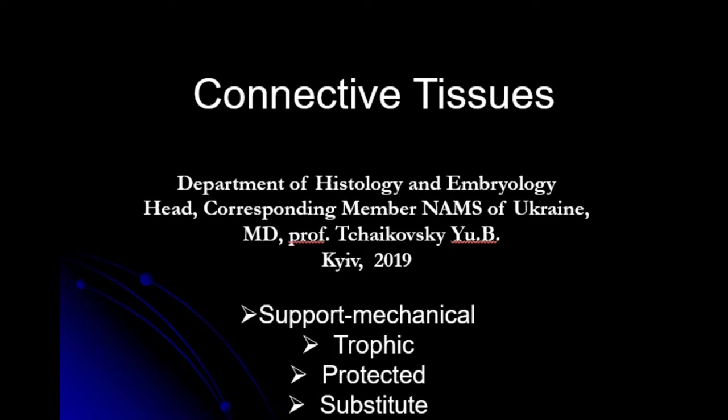This lecture is about connective tissue. The connective tissue is a complex derivative of mesenchymal origin. It consists of cellular diferone and extracellular substance.